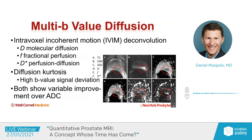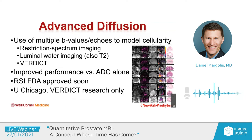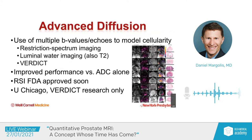This brings us to advanced diffusion acquisition. These use a combination of multiple B-values, directions, and echoes to model cellularity. One example is restriction-spectrum imaging. There are other examples looking at luminal water imaging, which can also be generated from T2-weighted images. And then the landmark VERDICT study from University College London. These all show improved performance over ADC alone. RSI is FDA-approved, and there are techniques from the University of Chicago looking at luminal water imaging and the VERDICT study, which are currently research projects but we hope to see as commercially available soon.